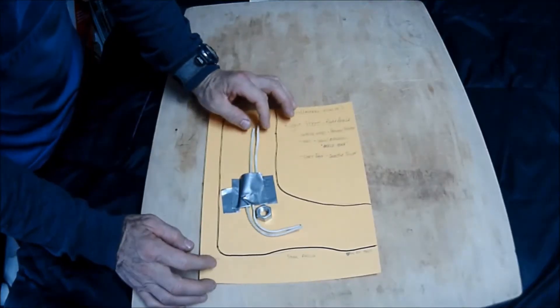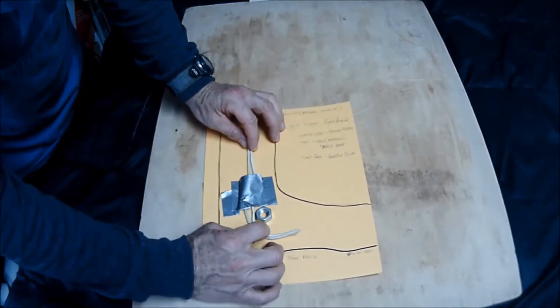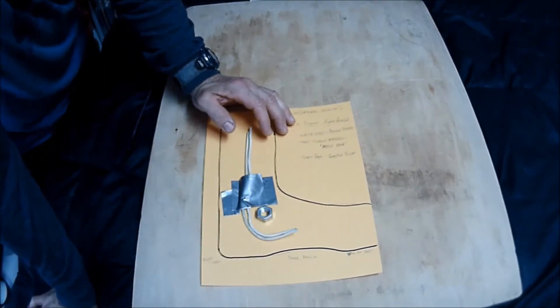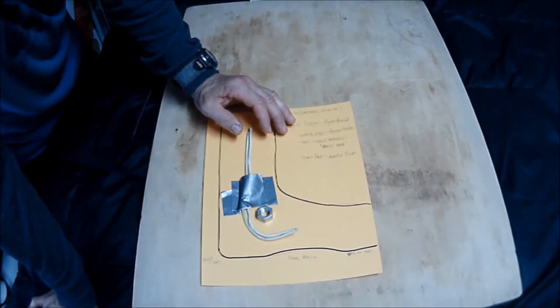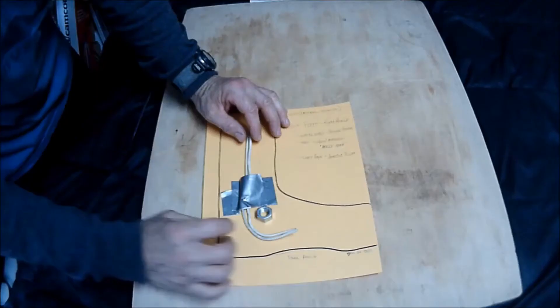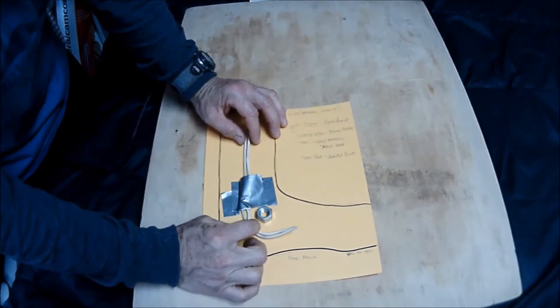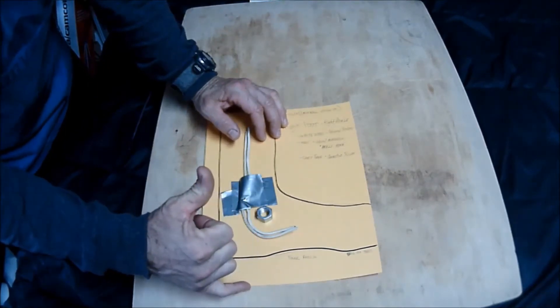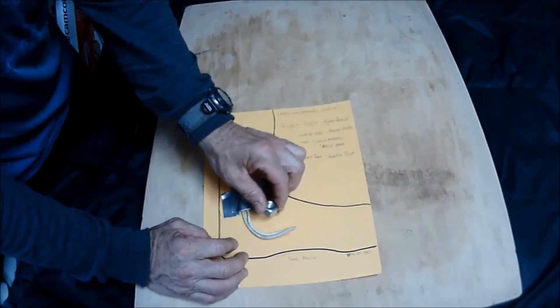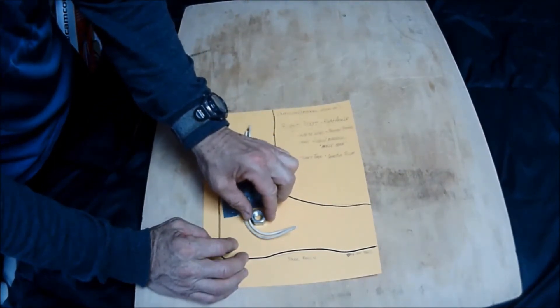The white wires represent the peroneal tendons—the peroneus longus and the peroneus brevis. They look like shoelaces when you see the surgical photographs.